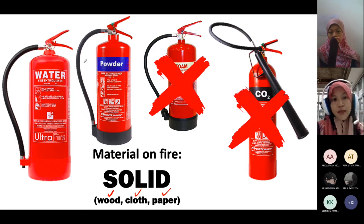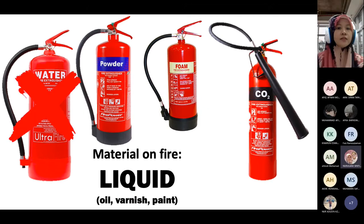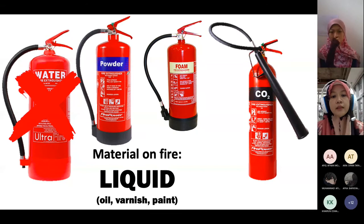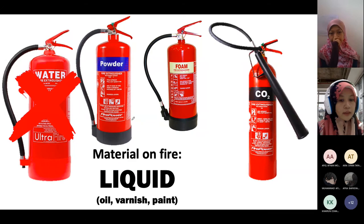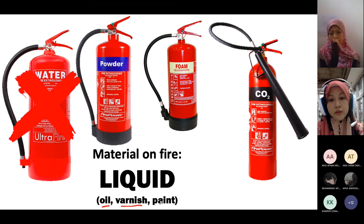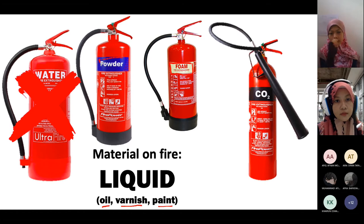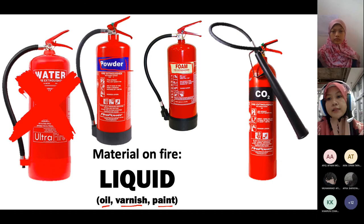Besides water-based fire extinguisher, we also have powder fire extinguisher — materials dia adalah powder, yang keluar tu memang serbuk. The second types of fire extinguisher is for materials that are made up from liquid, such as oil, varnish, and also paint. So kalaulah materials ni daripada liquid, we should use foam. The third is foam, dry powder, and also carbon dioxide — ha, this is gas, yang menggunakan carbon dioxide.